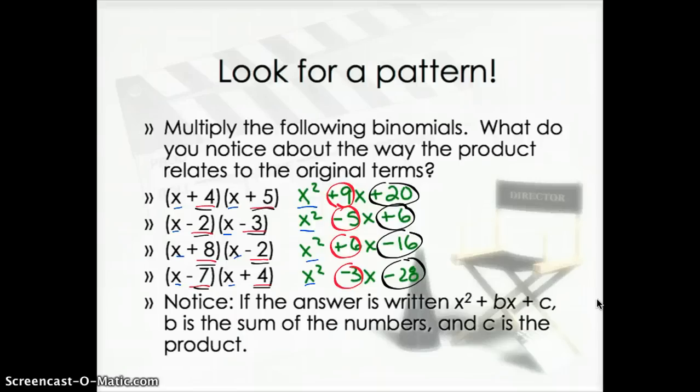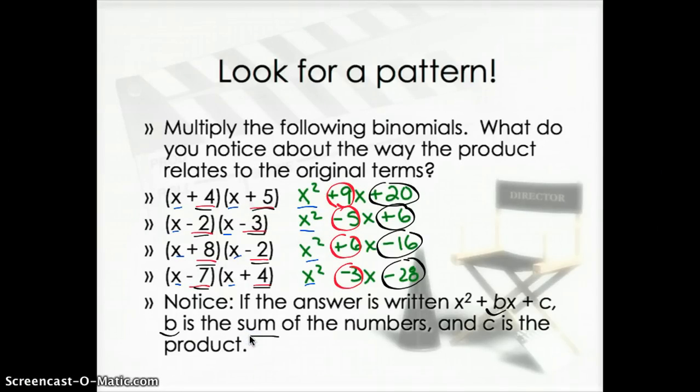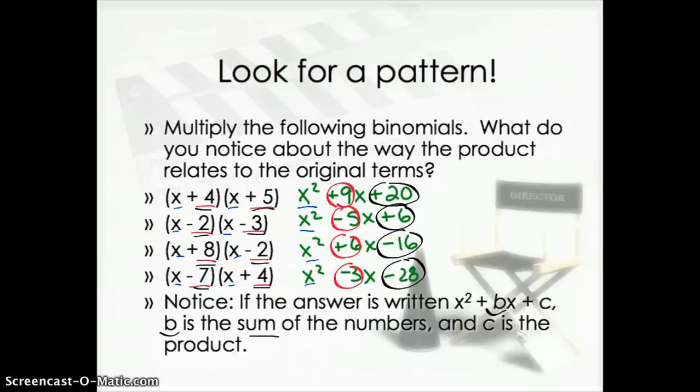If you realize this, then you got it right. If the answer is written x squared plus bx plus c, then b, so that middle term, the red one that I circled, is the sum of the numbers. So like 9 is the same thing as 4 plus 5. Negative 5 is the same thing as negative 2 plus negative 3. So they all are the sum of those two numbers. And c, this black circled one, is the product. So it's when you multiply them together. So 4 times 5, negative 2 times negative 3, 8 times negative 2, negative 7 times 4.